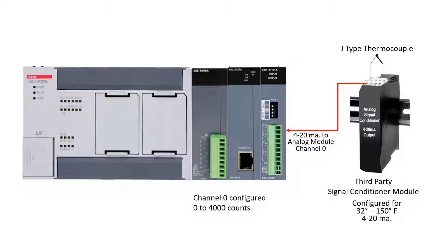Analog channel 0 has been configured in the XG5000 programming software for 0 to 4000 counts representing 32 to 150 degrees Fahrenheit.